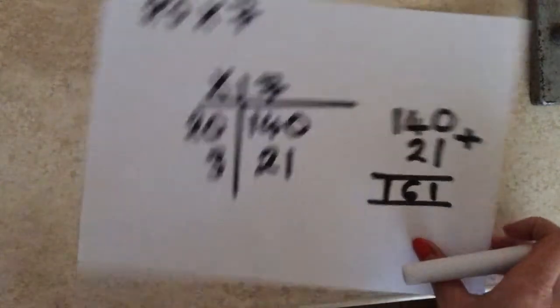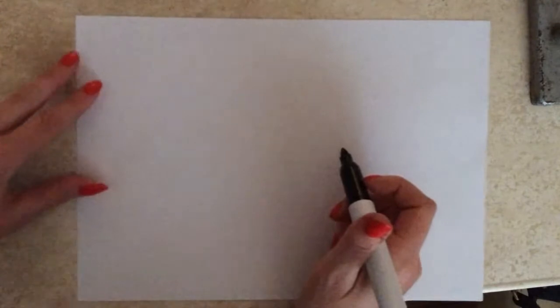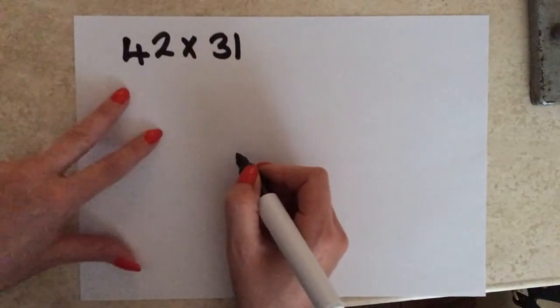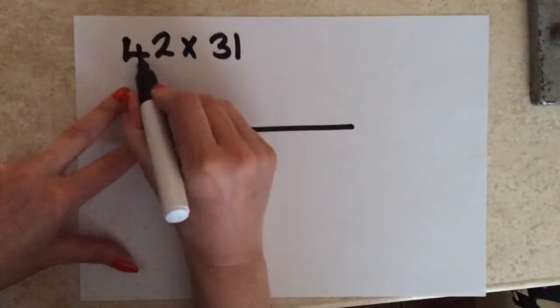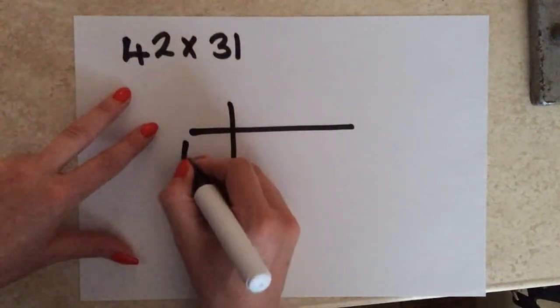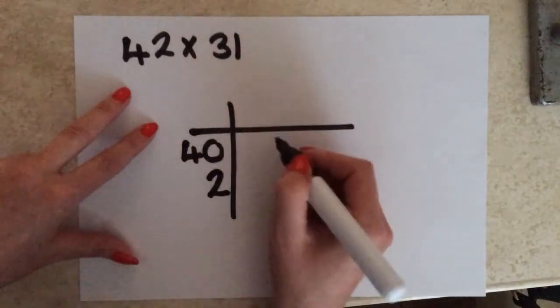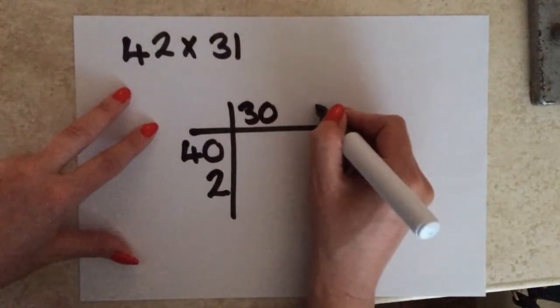On the second example, I'm going to multiply a 2-digit number by a 2-digit number. So for this example, I'm going to multiply 42 by 31. Again, we just set out the grid. So my 42, I'm going to break that down into tens and units — so I'm going to have 4 tens, which is 40, and then 2 units. And then 31, I'm going to break that down into tens again — so that's 3 tens, which is 30, and then 1 unit.